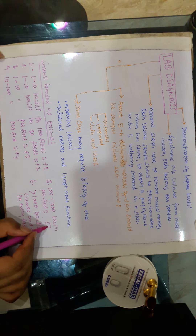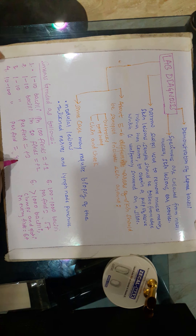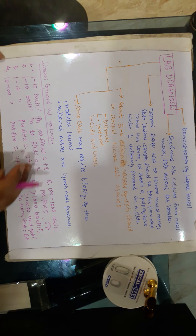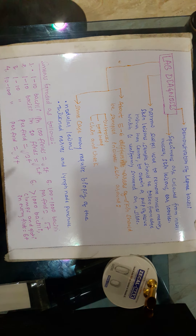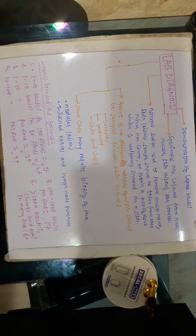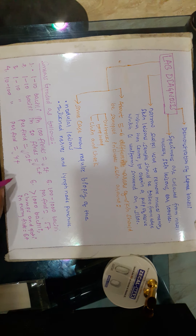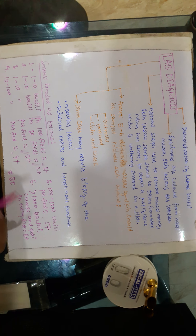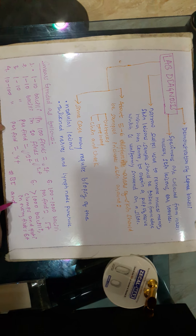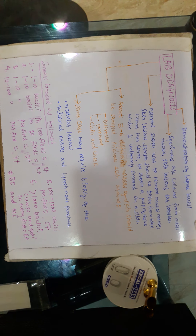These plus signs — 1 plus through 6 plus — are used to calculate the bacteriological index (BI). We will also discuss the morphological index (MI) in the next video.